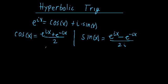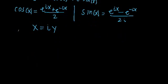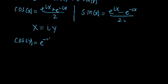Now we're going to consider the case of what happens when x is purely imaginary. We're going to write what happens when x is equal to i times y, where y is just some variable. We can substitute it in and see what we get. Cosine of iy is equal to e raised to i times i times y, which is just e to the negative y, plus e raised to the negative i times i times y, which is just e to the y, all over 2.